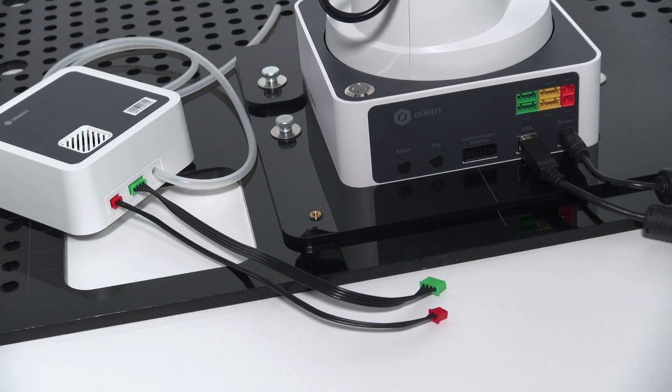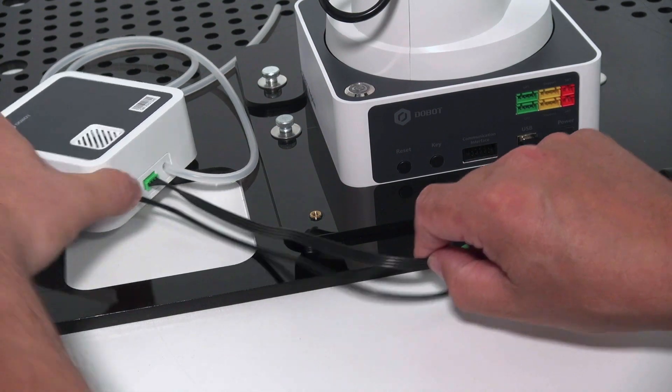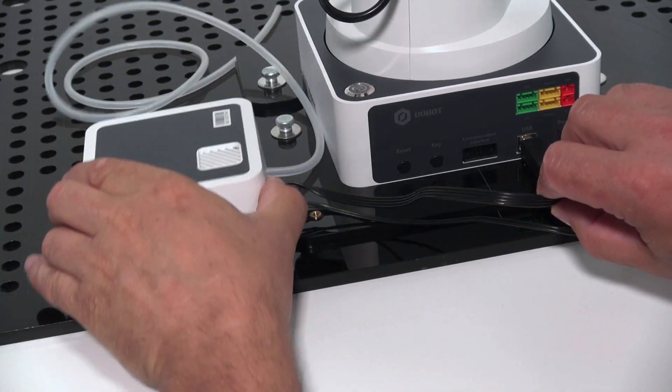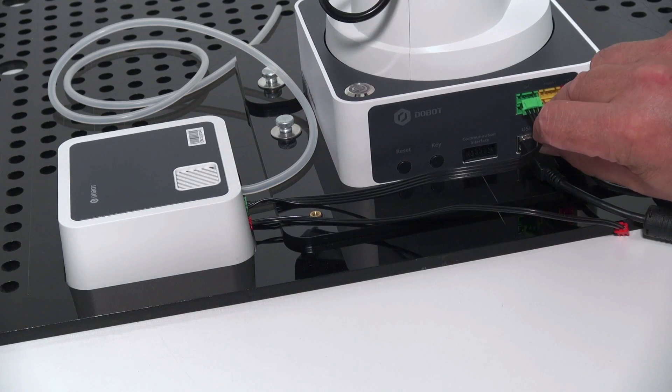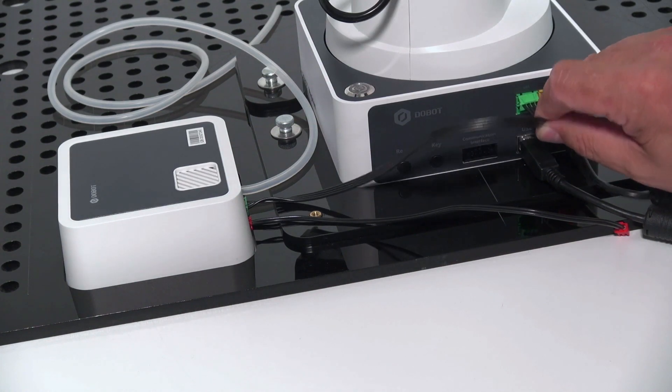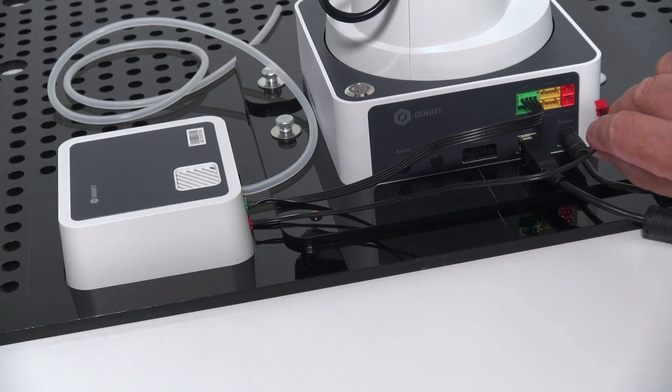The air pump you're gonna use later is connected via two plugs. The green one is for the controls, and the red one for the power supply of the pump. Use the upper connections.